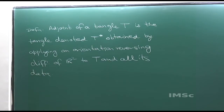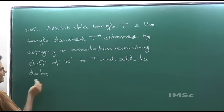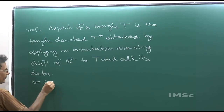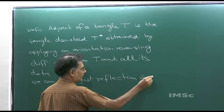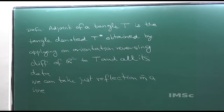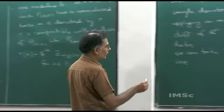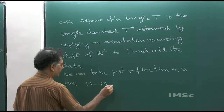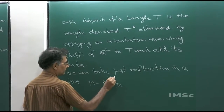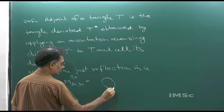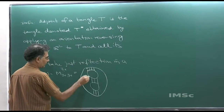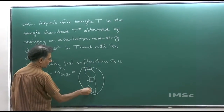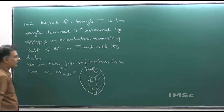What exactly does this mean? An orientation-reversing diffeomorphism — you can take that to be just a reflection in some line. I will do an example. For example, let us take the multiplication tangle M_{3+}. M, which is M_{3+}, looks like a certain picture — that is the multiplication tangle — with internal disks labeled D1 and D2.